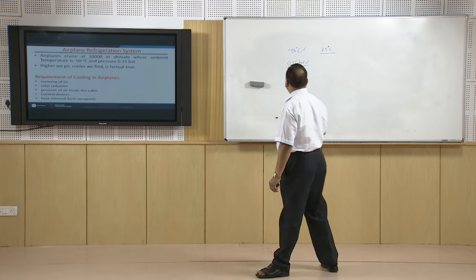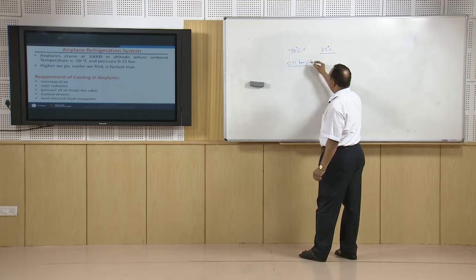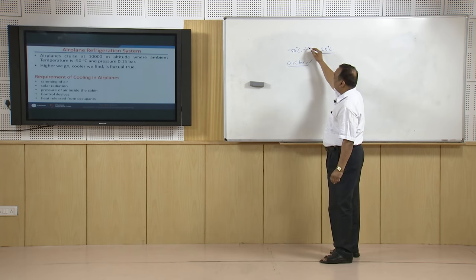For our comfort, the required temperature is 25 degrees centigrade and pressure has to be ideally 1 atmospheric pressure, or 1 bar, or close to 1 bar. In any case, at 0.15 bar pressure, no human being can survive. So the pressure has to be increased in the airplane and temperature has to be increased.